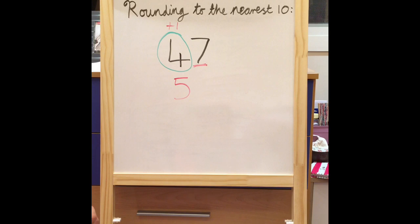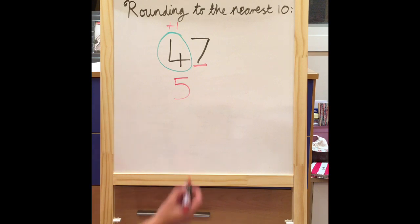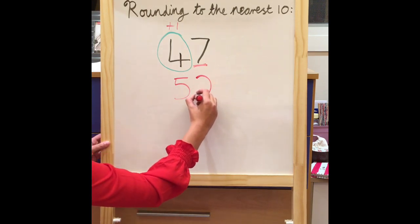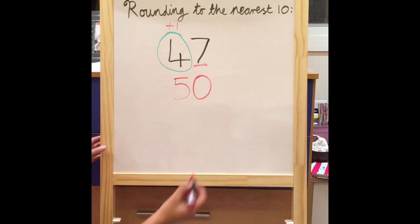Numbers on the left stay the same — I don't have any numbers on the left so I don't need to worry about that. Numbers on the right, zero is your name. Your seven turns into a zero. So 47 rounded to the nearest ten is 50.